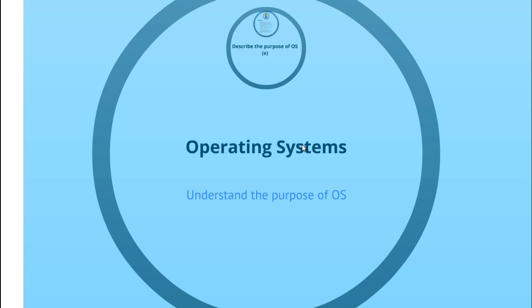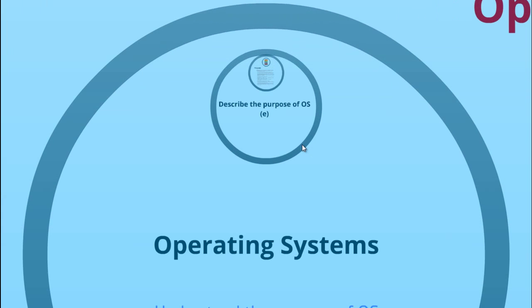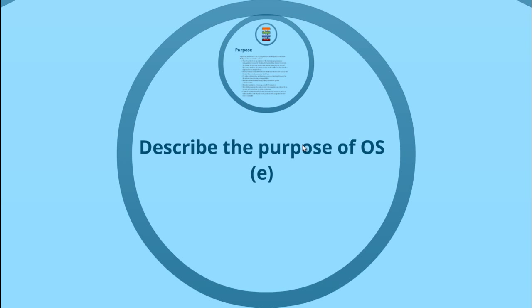In this video we're going to look at operating systems, and initially for this short video we're going to understand the purpose of an operating system. This is a very simple question that can come up in the exam - it could be four marks or potentially eight marks, and there are lots of different points. I'd suggest you remember this by thinking about your own personal operating system at home, though there are some slight differences to be careful of.